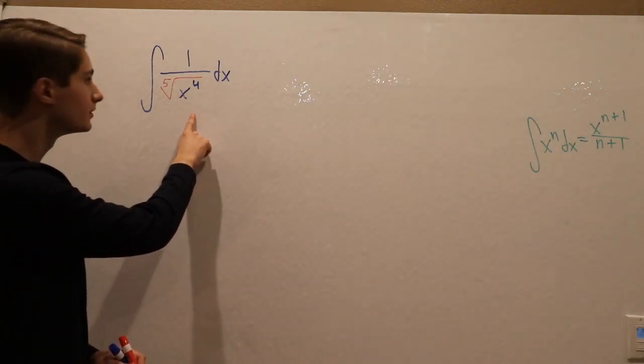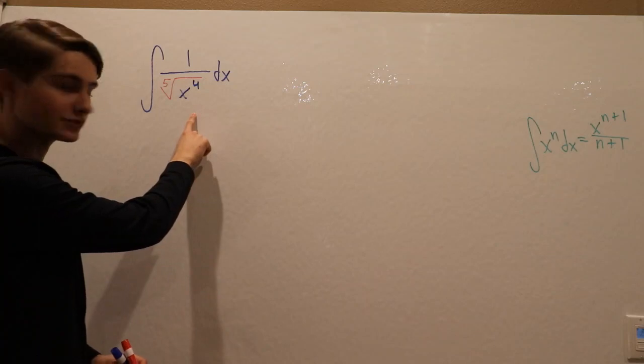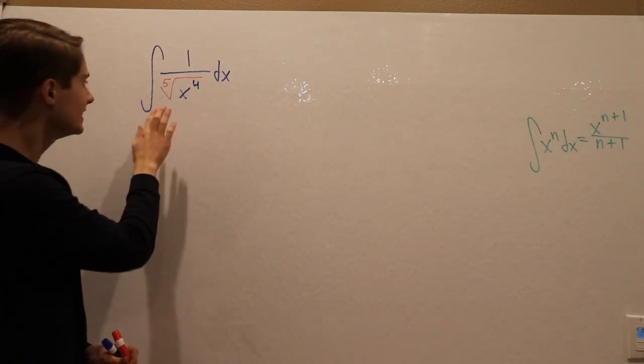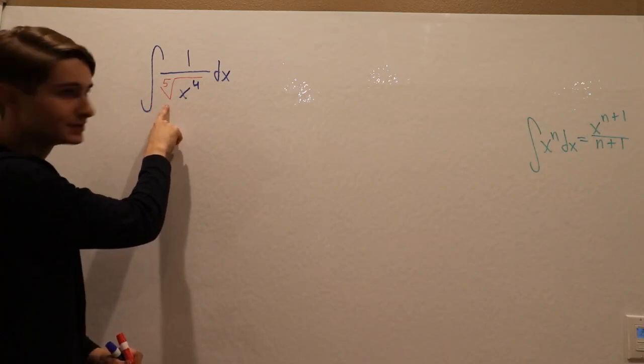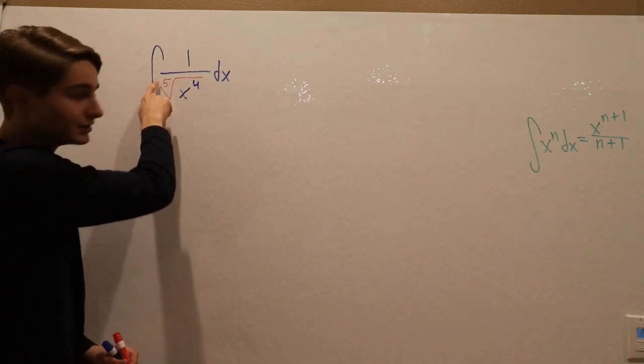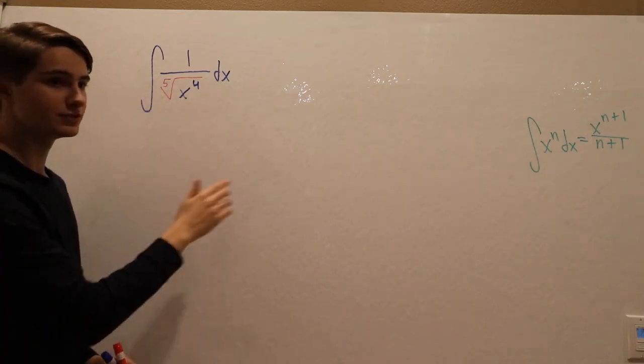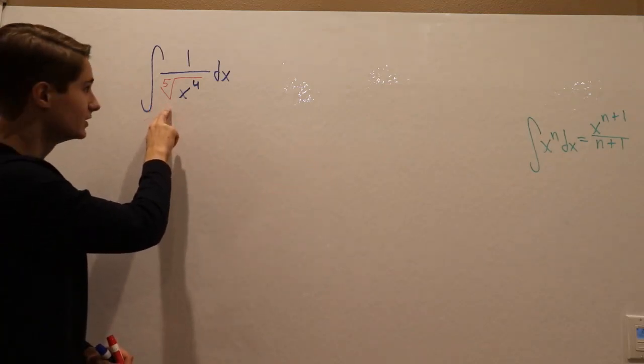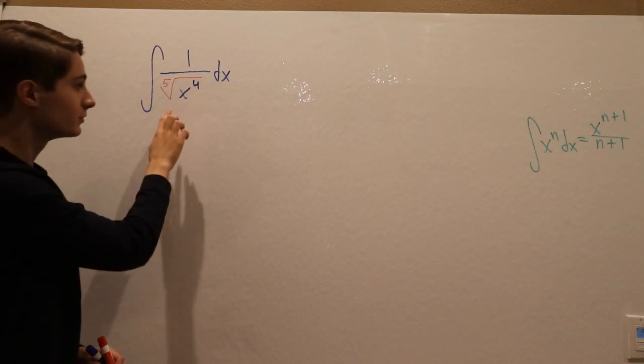We are going to integrate one over the fifth root of x to the fourth. Now in calculus as a general rule, anytime you see a root with a power higher than two—cube roots, fourth roots, fifth roots, anything higher than that—I want to rewrite this root in terms of powers, and the way I do that is